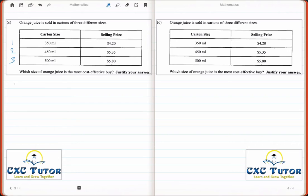Starting with the first juice, we want to work out its cost per milliliter. It costs $4.20 and contains 350 milliliters, so that should give us the cost per milliliter as $0.012 per ml.